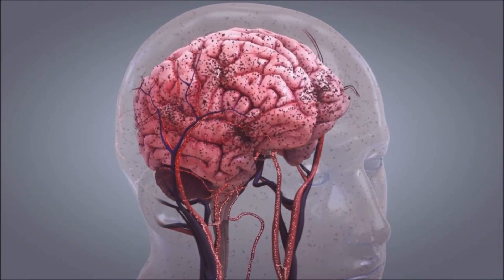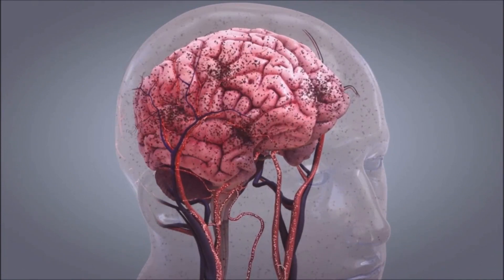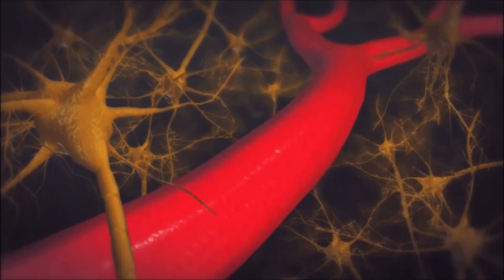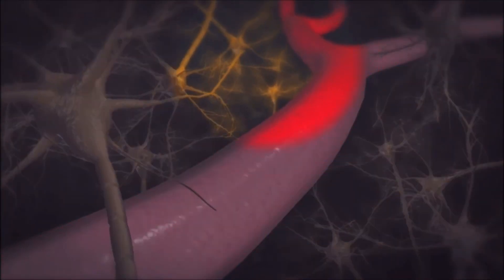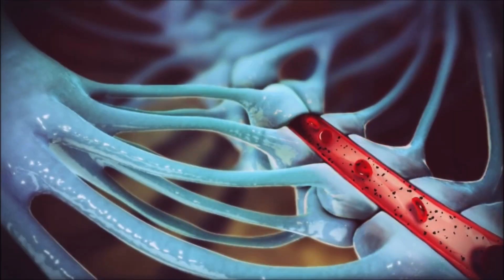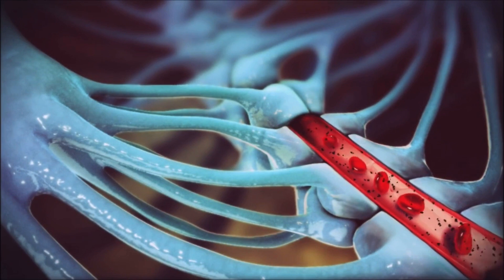Without the blood-brain barrier, the blood would deposit both good and bad substances into the brain itself. This blood-brain barrier protects the brain from many toxins. It does not protect the brain from mercury.